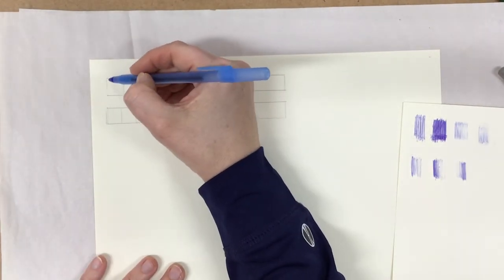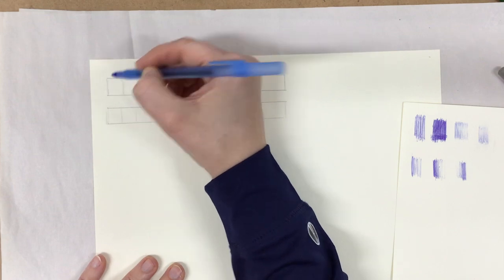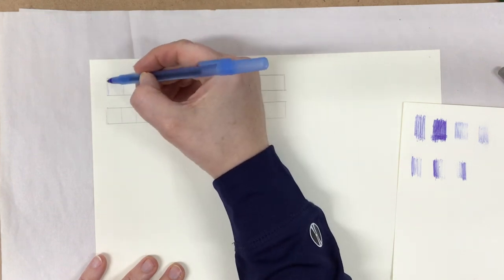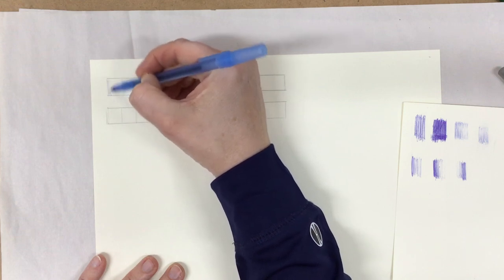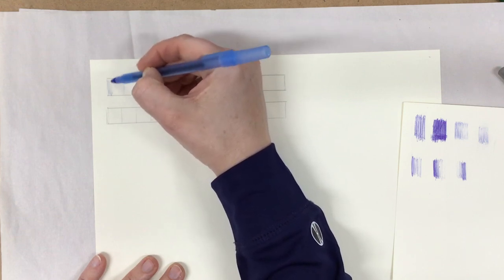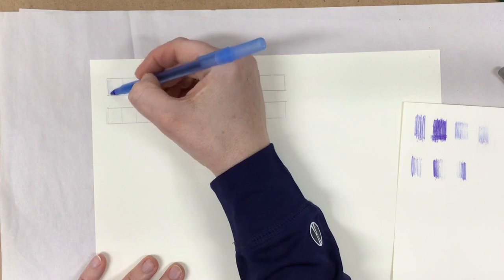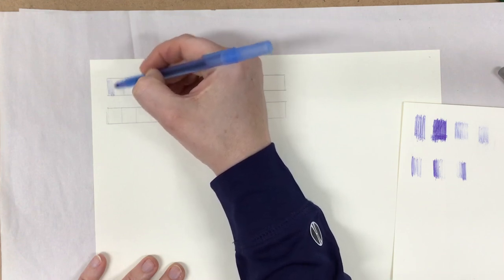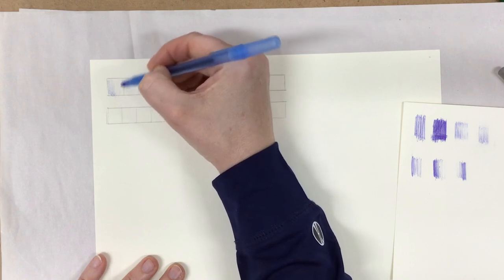So I'm actually going to start kind of light. And so I have my pen on a tilt and I'm barely scratching the surface of the paper. So it's got a really nice light value.